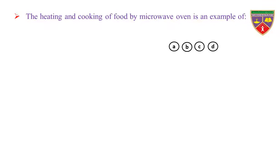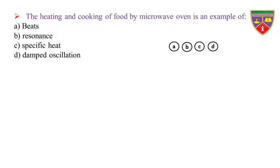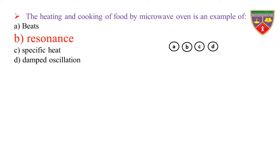The heating and cooking of food by microwave oven is an example of: Option A: beats. Option B: resonance. Option C: specific heat. Option D: damped oscillations. The key is resonance. Therefore, the correct option is B.